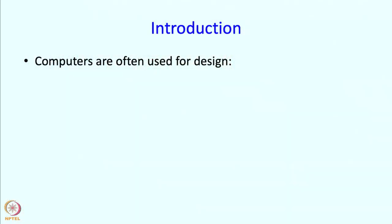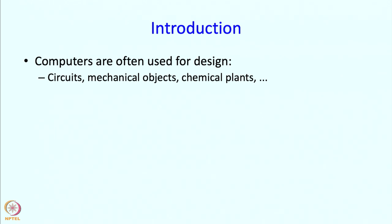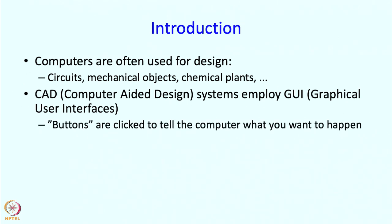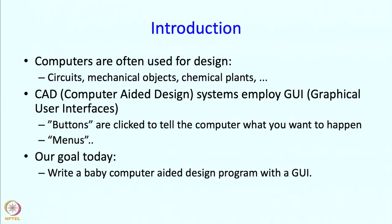Computers are often used for designing various objects — circuits, mechanical objects, chemical plants and lots of other things. CAD, or computer aided design systems, employ graphical user interfaces, often abbreviated as GUI. You have already seen this in our IDE: there are buttons you click to tell the computer what you want to happen, or you may also have menus. Our goal for today is to figure out how these things are actually implemented, and we will be doing a very preliminary, baby computer aided design program which will have a graphical user interface.